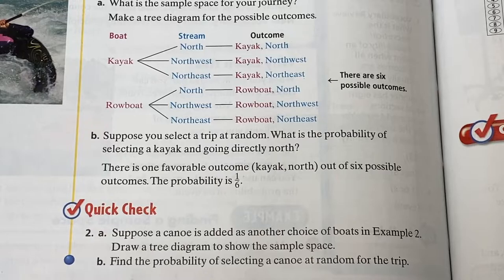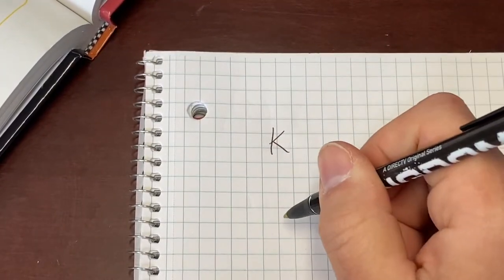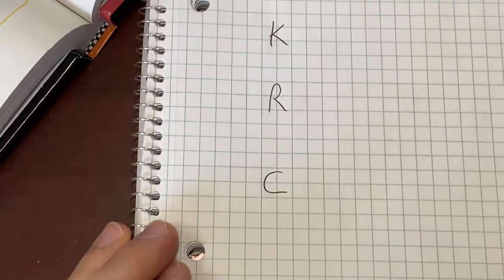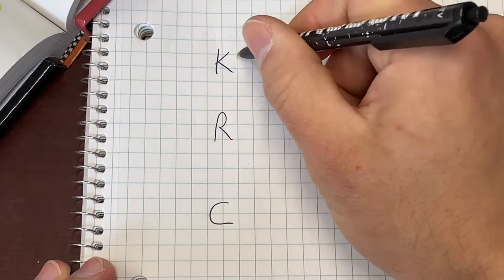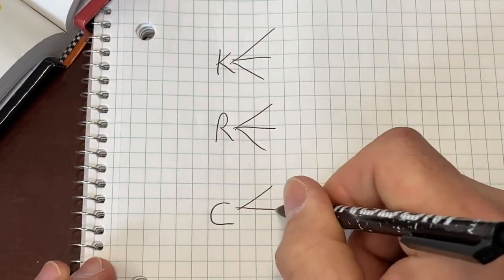So what we're doing here is using sample spaces to calculate outcomes. Quick check number two says suppose a canoe is added as another choice. Draw that tree diagram. Piece of cake. So we still start with kayak. We still have our rowboat, but now we're adding canoe. Now we're adding canoe. And now we need our three branches for the directions off of each one of these.